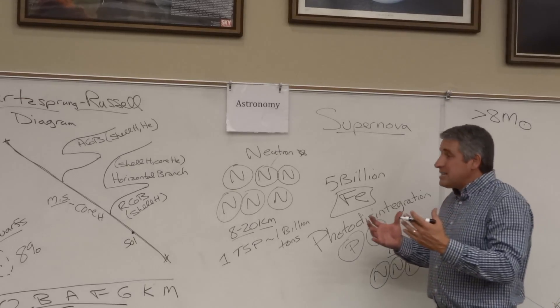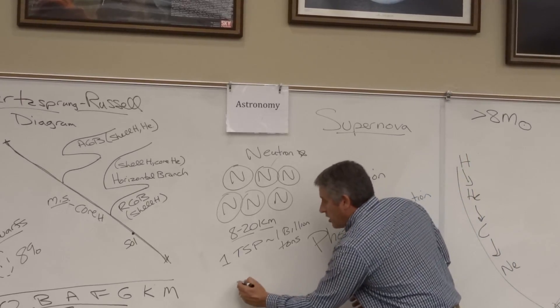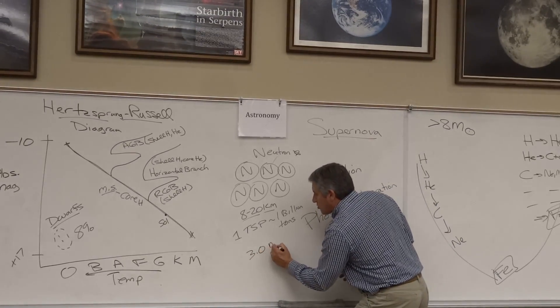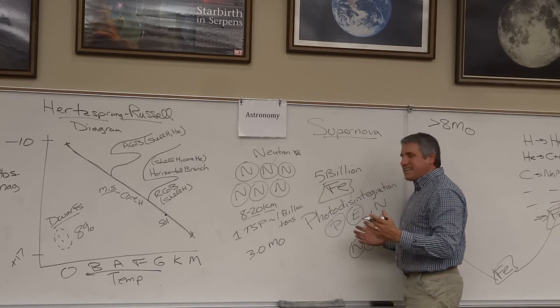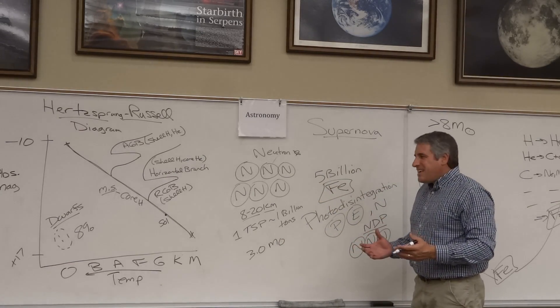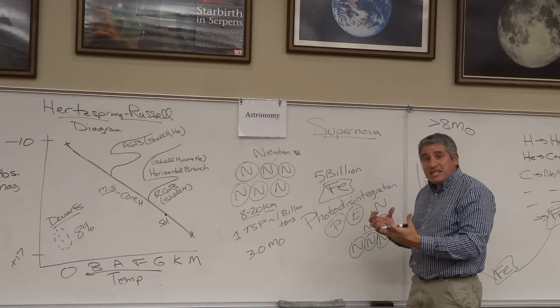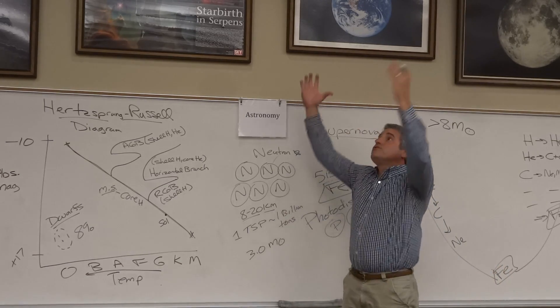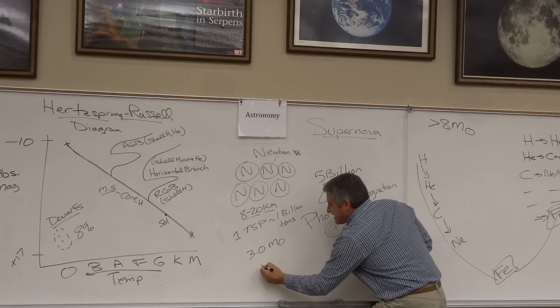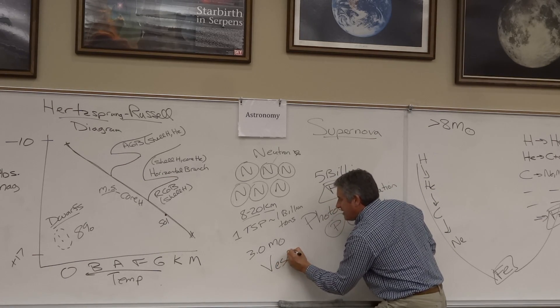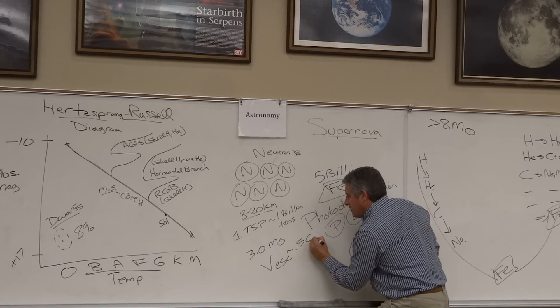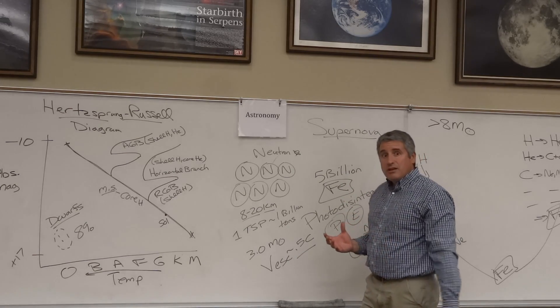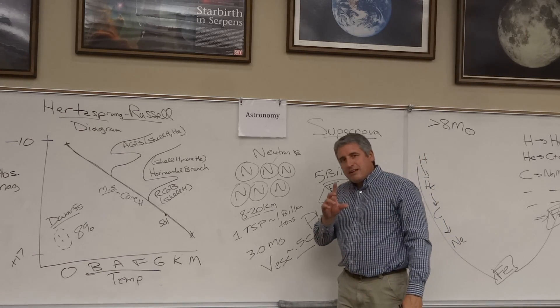The maximum size of a neutron star is somewhere on the order of about three solar masses. That's as big as they can be. They have such a strong gravitational pull that the escape velocity of a neutron star, how fast you need to move just to escape its gravity, is half the speed of light. It's an extreme object, but it's not the end.